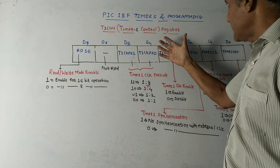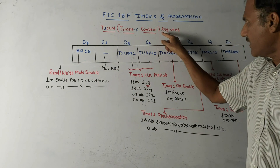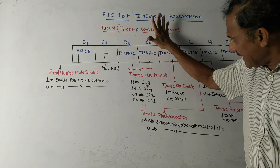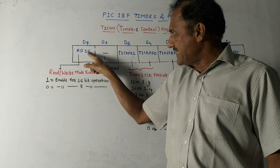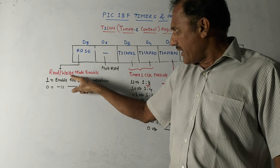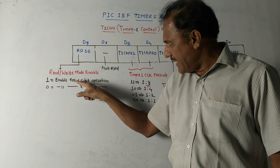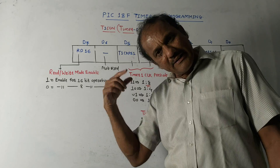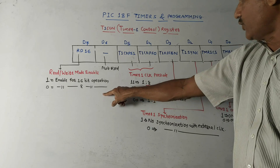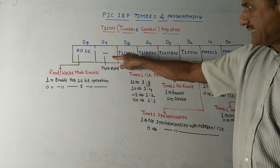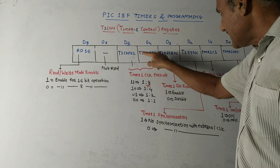Next is Timer 1 control register. On the same lines as Timer 0, these are the bits related to the Timer 1 control register. This is basically an 8-bit control register. The first bit, MSB d7, is RW16 - it is a read/write mode enable bit. If it is 1, the timer is enabled for 16-bit read and write operation. If it is 0, it is enabled for 8-bit read and write operation. Bit d6 is not used.